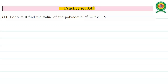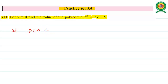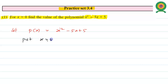In Practice Set 3.4, the first question is: for x equals 0, find the value of the polynomial x² minus 5x plus 5. Let us assume P(x) to be the given polynomial, so P(x) equals x² minus 5x plus 5.